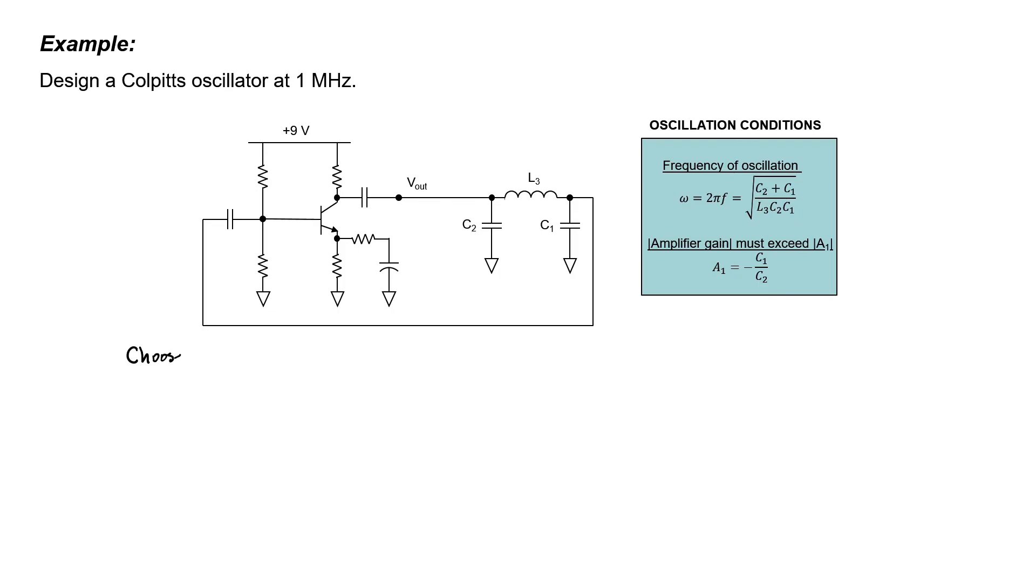1 MHz is a radio frequency, so we know that we're going to need fairly small capacitors. But since I intend to actually build this circuit on a breadboard, I don't want the values of the capacitors to be so low that they start to resemble the capacitances between the plates of the breadboard.